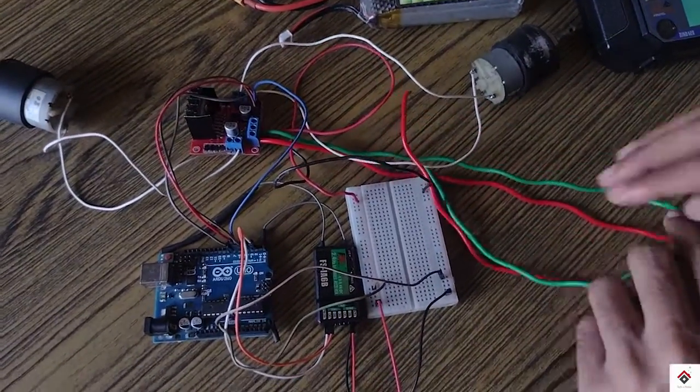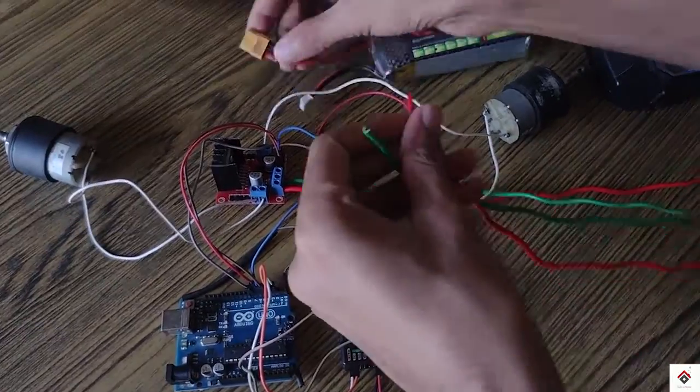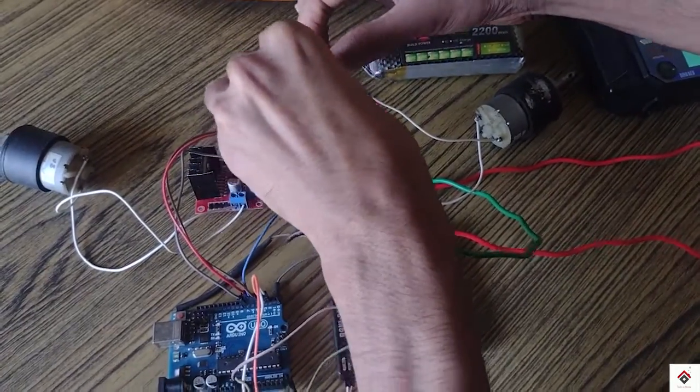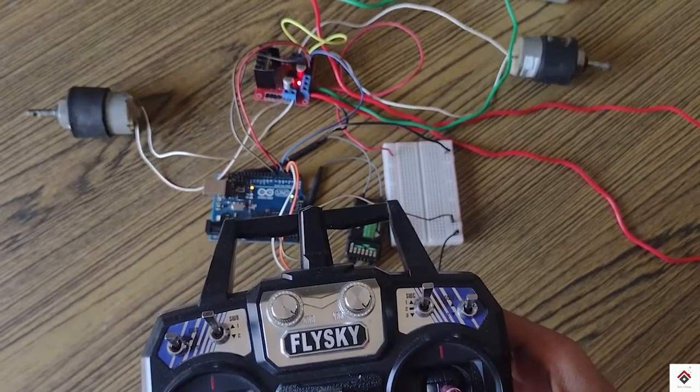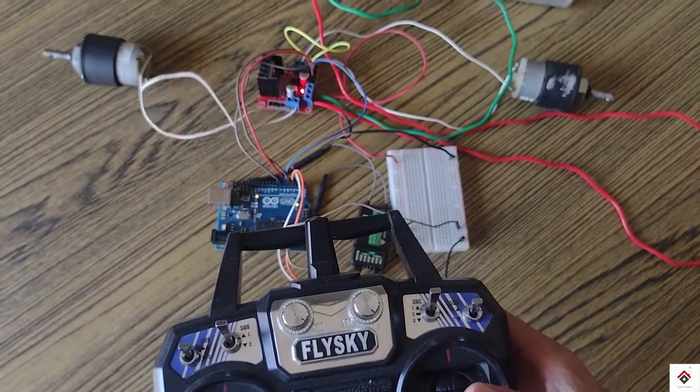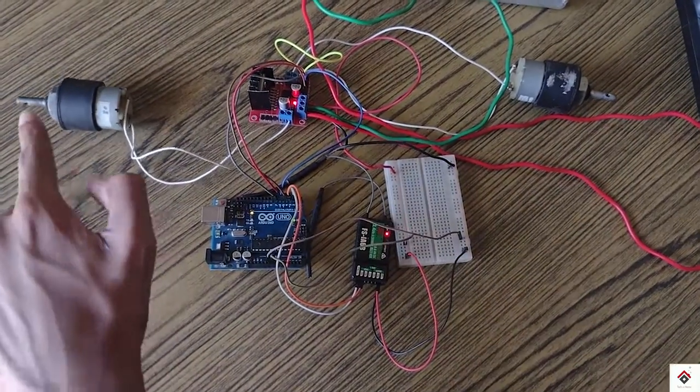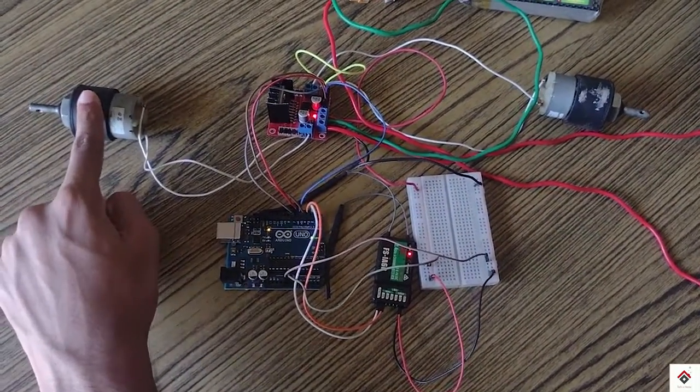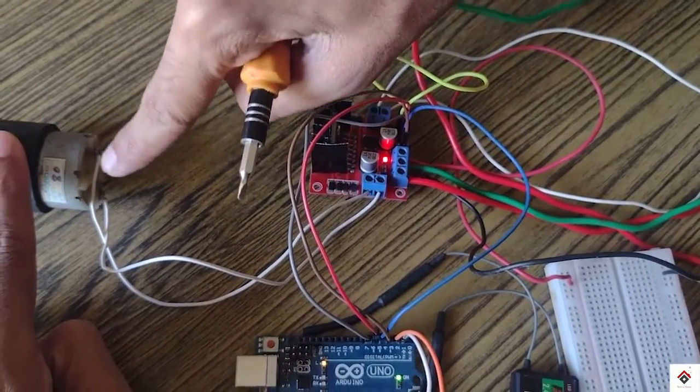Finally I am connecting the 11.1V LiPo battery. So if any of your motor is rotating in wrong direction, you can just interchange these two wires or else directly in the motor itself.